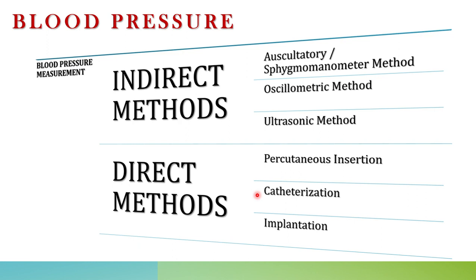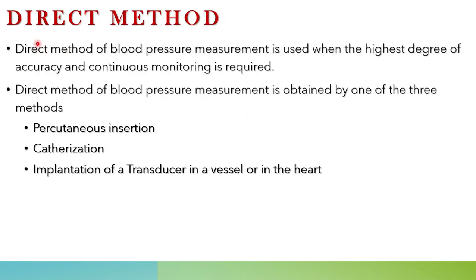In this class we are going to discuss the direct methods: percutaneous insertion, catheterization, and the implantation of a transducer in the blood vessel. The direct method of blood pressure measurement is used when a higher degree of accuracy and continuous monitoring is required. In indirect methods, accuracy is less and there is a chance of errors, and continuous monitoring is not suitable.